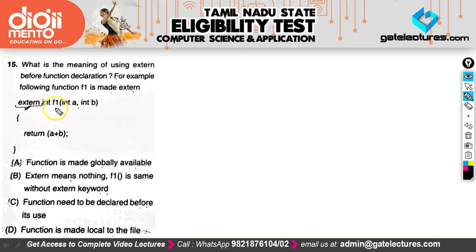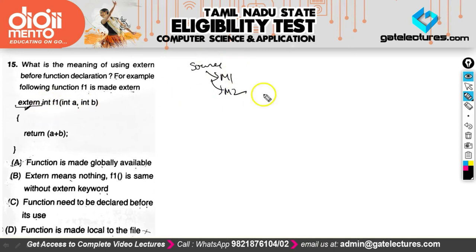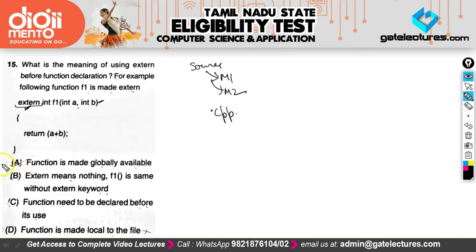The extern keyword is actually used to extend the visibility of our function. In a particular source file, we can have many modules, and extern allows us to use the function anywhere in that source file. An extern function or member can be accessed outside the scope of the .cpp file in which it was defined. Option A — 'function is made globally available' — says it correctly, to all modules of that source file.